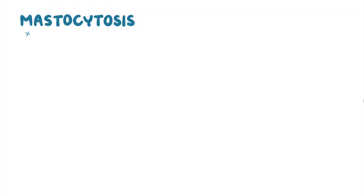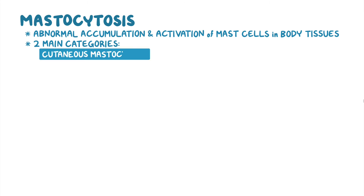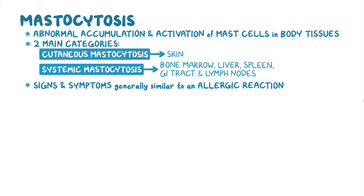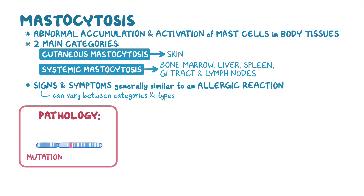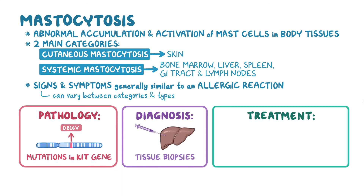As a quick recap, mastocytosis is a rare disorder characterized by abnormal accumulation and activation of mast cells in body tissues. It can be divided into two main categories: cutaneous mastocytosis, primarily affecting the skin, and systemic mastocytosis, which affects the bone marrow and internal organs like the liver, spleen, gastrointestinal tract, and lymph nodes. Signs and symptoms, which are generally similar to those of an allergic reaction, can vary between categories and types. Mastocytosis is usually caused by mutations in the KIT gene. A diagnosis can be confirmed through tissue biopsies, and treatment is focused on managing mast cell activity and the effects on specific tissues.